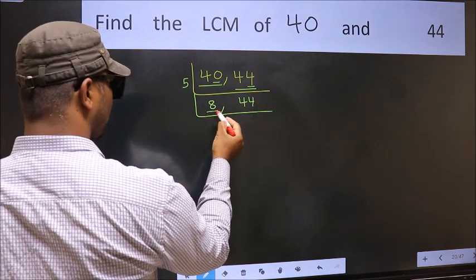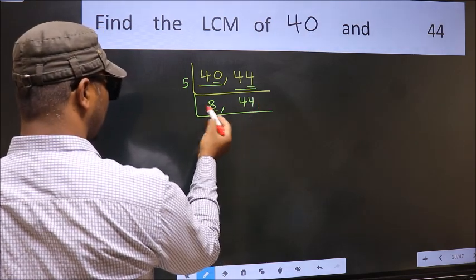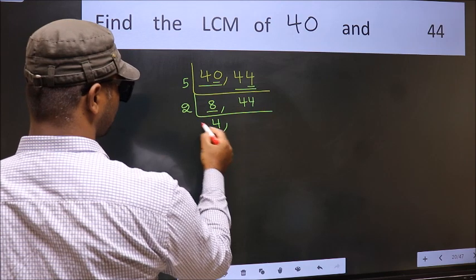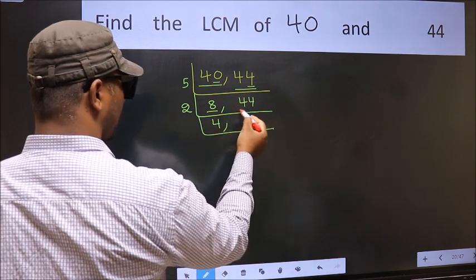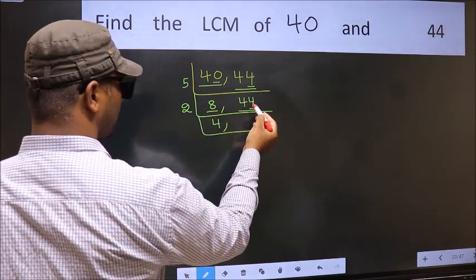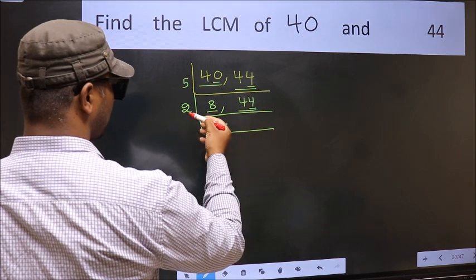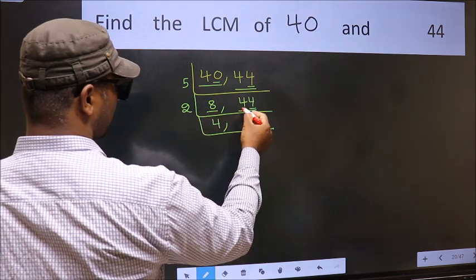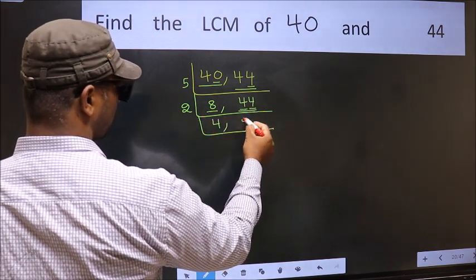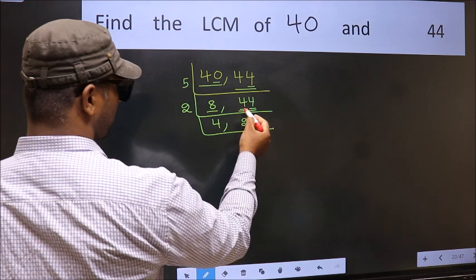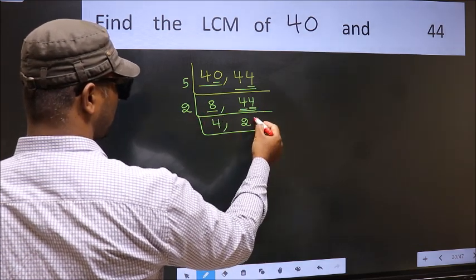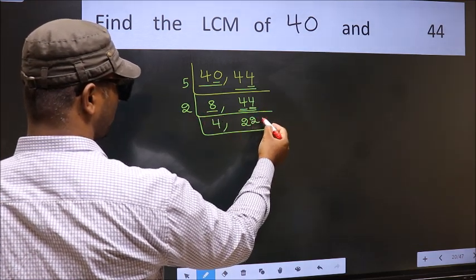Now here we have 8. 8 is 2 fours, 8. The other number is 44. Last digit 4 — even, so this is divisible by 2. First number: 4. When do we get 4 in the 2 table? 2 twos are 4. The other number: 4. When do we get 4 in the 2 table? 2 twos are 4.